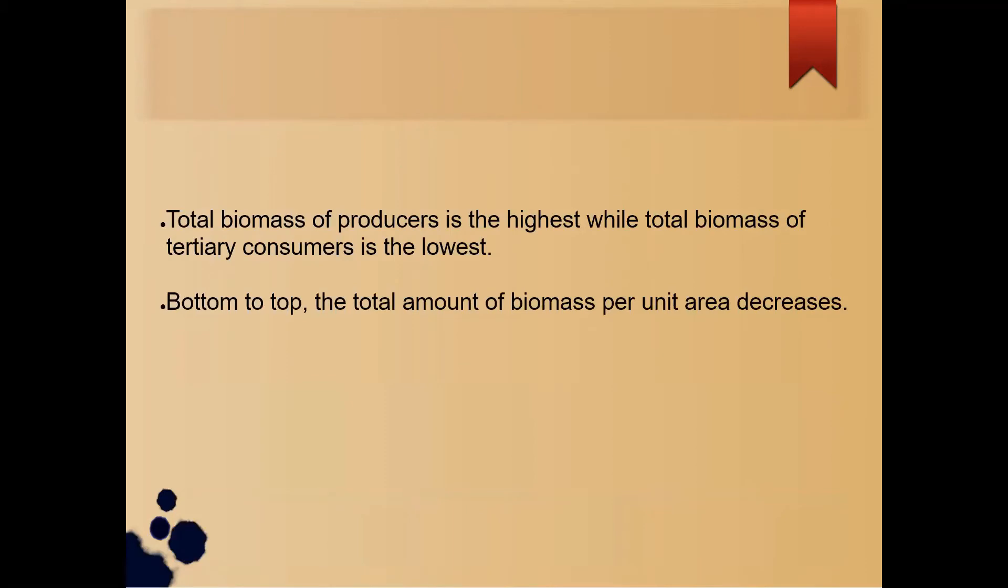Total biomass of producers is the highest while total biomass of tertiary consumers is the lowest. It is arranged from bottom to top and the total amount of biomass per unit area will decrease.